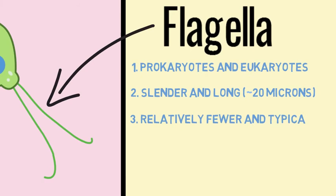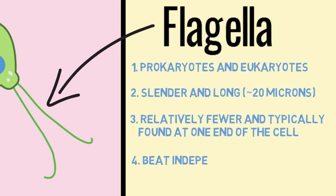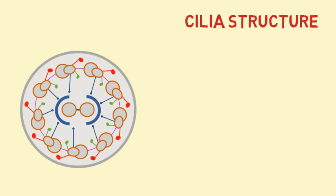You would usually find few flagella on cells, while cilia tend to be found all around the cell surface. Cilia beat in a coordinated fashion to propel cells forward, while flagella move independently in a wave-like motion.